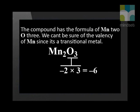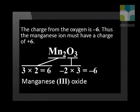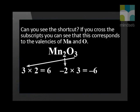Let's try another example: Mn₂O₃. Mn is a transition element, so we can't be sure of its valency. But we know oxygen has a valency of 2, so the total charge from oxygen is minus 6. The manganese ions must have an overall charge of plus 6, but there are 2 atoms of manganese present, so each must have a charge of plus 3. The chemical name is manganese(III) oxide. Can you see a shortcut? If you uncross the subscripts, you can see this corresponds to the valencies of Mn and O.